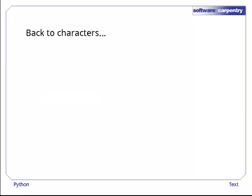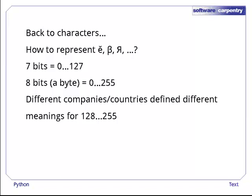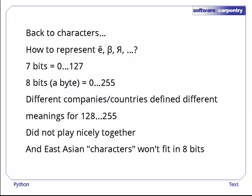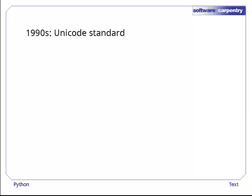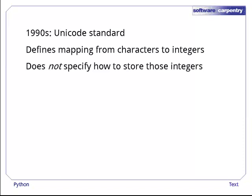Back to characters. ASCII is fine for the digit 2, the letter Q, or a circumflex, but how should we store E with a grave accent, the Greek letter beta, or the Cyrillic reverse R? Seven bits gives us numbers from 0 to 127, but an 8-bit byte can represent numbers up to 255. So why not extend the ASCII standard to define meanings for those extra 128 numbers? Unfortunately, everyone did — but in different and incompatible ways, resulting in a mess. If a program assumed characters were encoded using Spanish rules when they were actually encoded in Bulgarian, what it got was gibberish. And setting that aside, many languages — particularly those of East Asia — use a lot more than 256 distinct symbols. The solution that emerged in the 1990s is called the Unicode Standard. It defines integer values to represent thousands of different characters and symbols, but does not define how to store those integers in a file or as a string in memory.